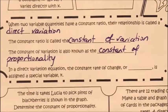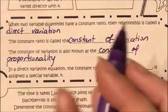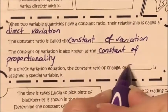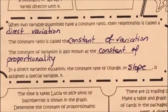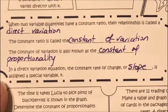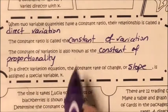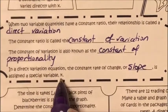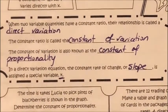In a direct variation equation, the constant rate of change — or slope, remember from last time, constant rate of change and slope are the same thing — is assigned a special variable k. So k is the variable assigned to it.